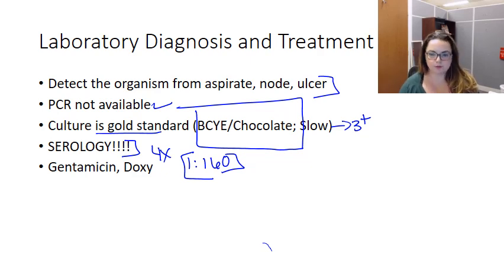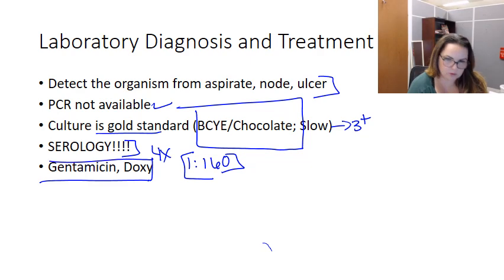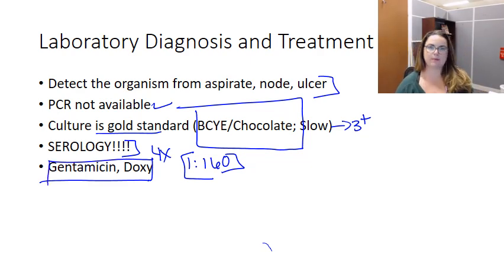If you're going to treat it — and hopefully you will, because you'll find it quickly — you're going to want to use gentamicin, doxycycline, or ciprofloxacin. Those are the recommended options for tularemia.